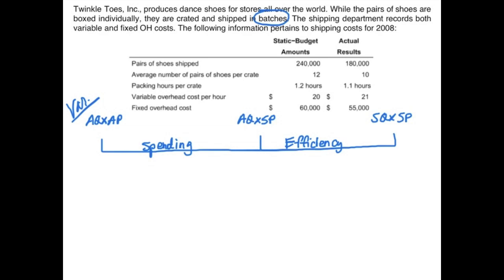The first thing we need to find is our actual quantity. This problem is slightly different because it's on a batch level, so when we're looking at quantity, we need to think in batches. Actual quantity refers to packing hours, and packing hours are based on crates. So the first step is to compute the number of crates. They tell us that pairs of shoes shipped is 180,000 and the number of pairs of shoes per crate is 10.